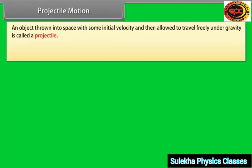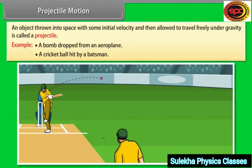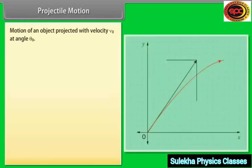An object thrown into space with some initial velocity and then allowed to travel freely under gravity is called a projectile. For example, a bomb dropped from an airplane, or a cricket ball hit by a batsman.